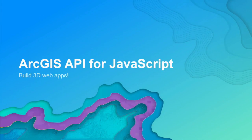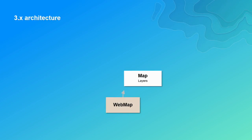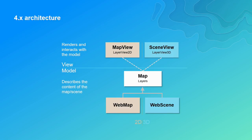Let's go into a bit more detail on the API and how to build 3D web apps. A bit of history: the 3X architecture was simple — we had the map and layers. In 4X, we needed to separate the view from the model. Whatever describes the content of the map — how it looks, which layers we have — that's in the map and layer part. Whatever renders that content is what we call the view.